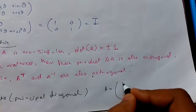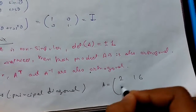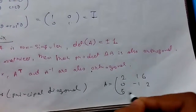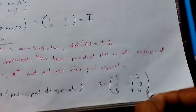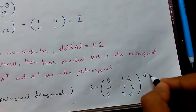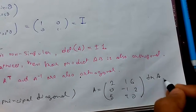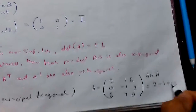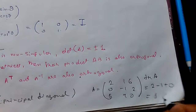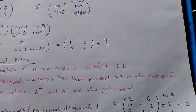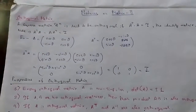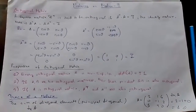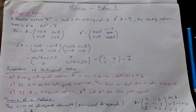For example, suppose the matrix is: 2, 1, 6 in row one; 0, minus 1, 2 in row two; 5, 4, 0 in row three. Then the trace of matrix A is tr(A) = 2 + (minus 1) + 0 = 1. So that was the trace of the matrix and orthogonal matrix. If you had any problems comment below, and if you liked my video hit the thumbs up button and subscribe for more videos. Thank you.